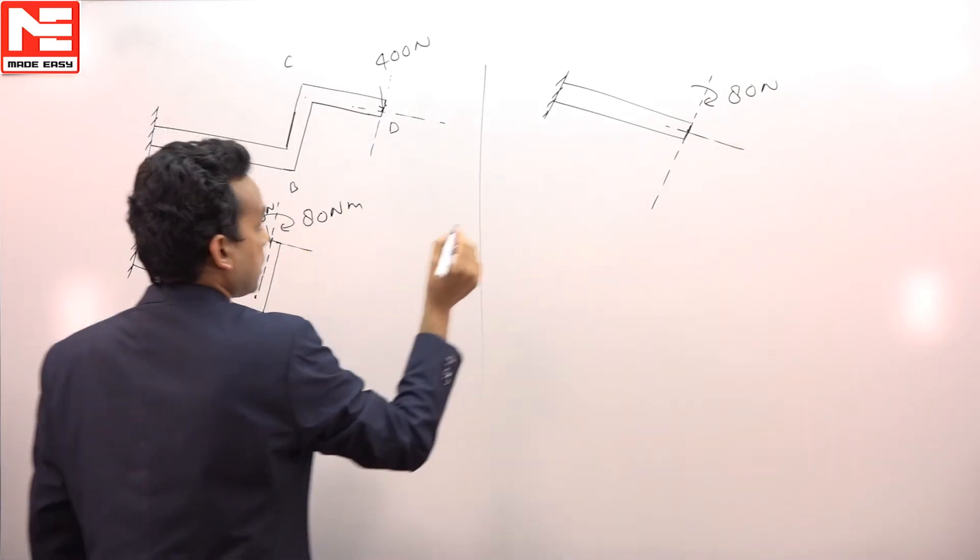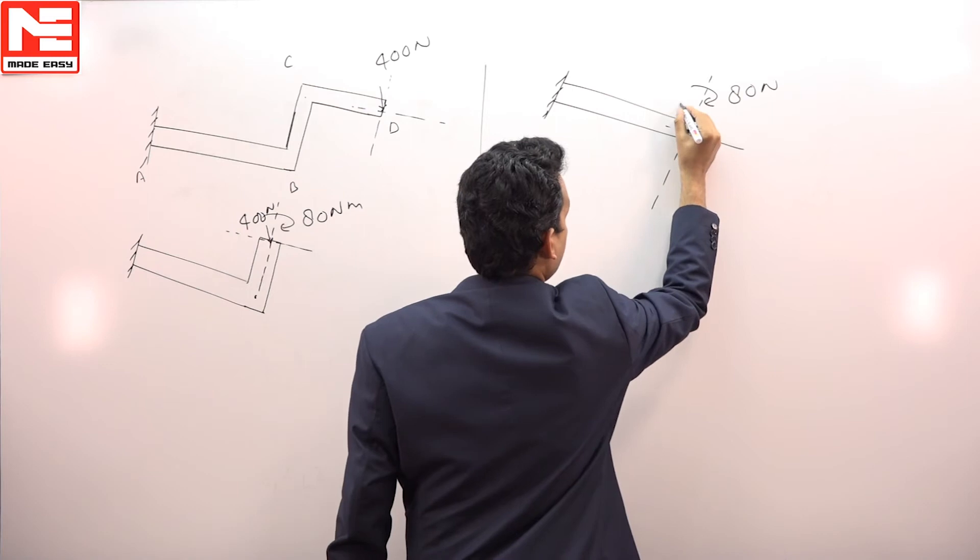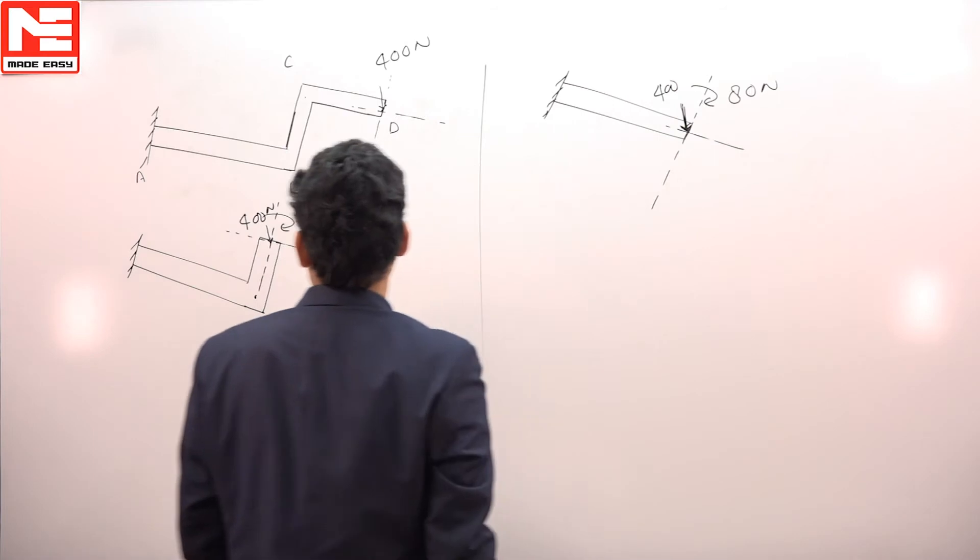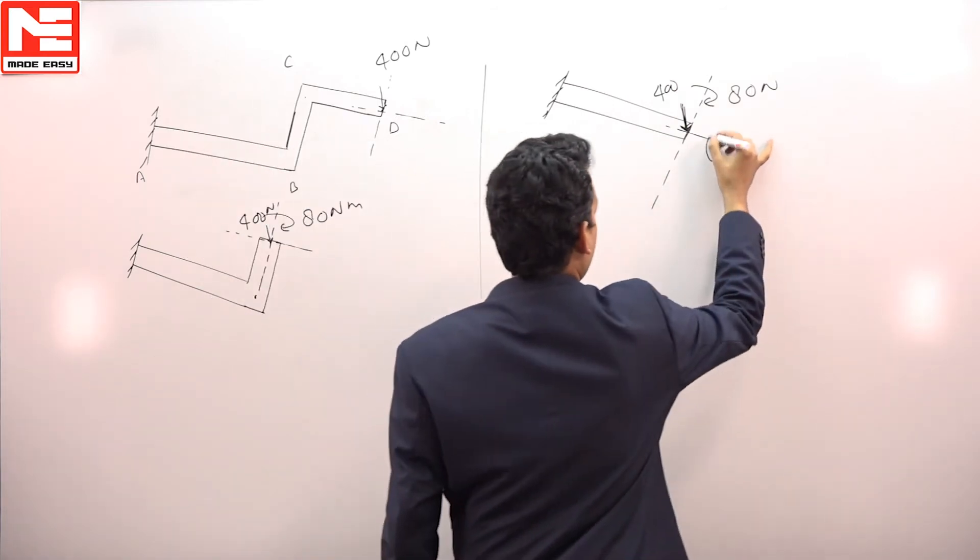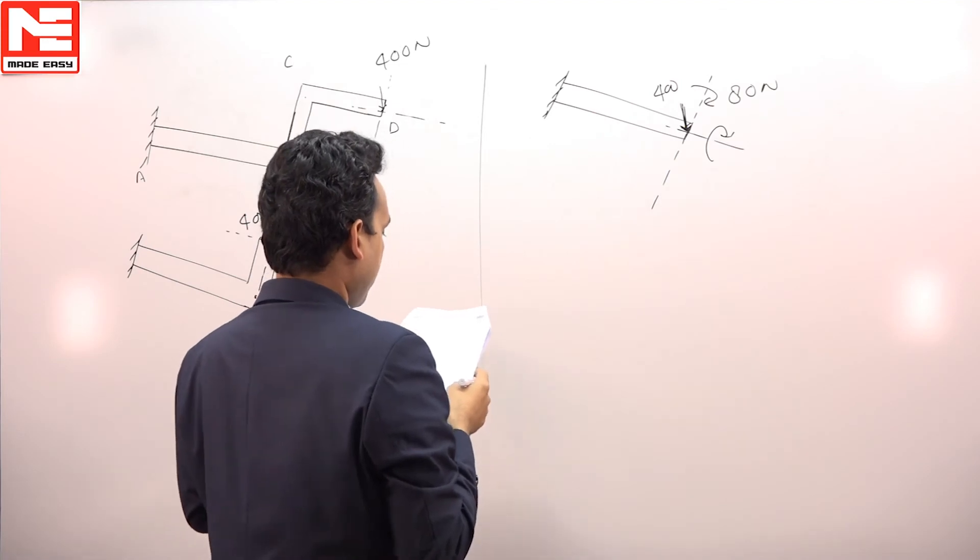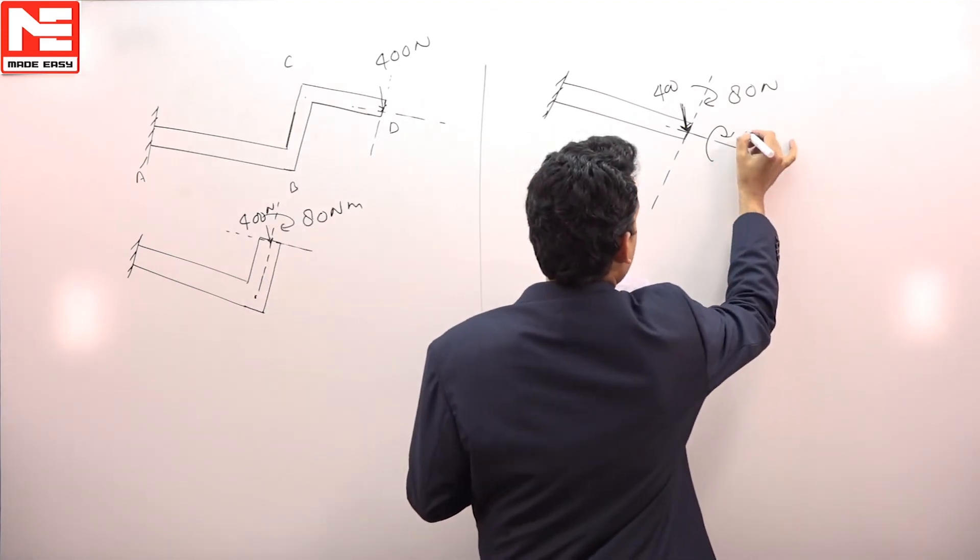Due to shifting of this load, you will get a couple about this axis. The magnitude of this couple will be 400 into 0.25, that is 100 Newton meter.